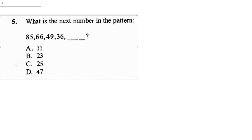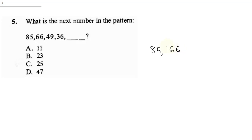The next question asks: what is the next number in the pattern? All you need to do is understand the pattern. This is 85, the next is 66. The difference between 85 and 66 is minus 19. The next one is 49, and the difference between 66 and 49 is minus 17.